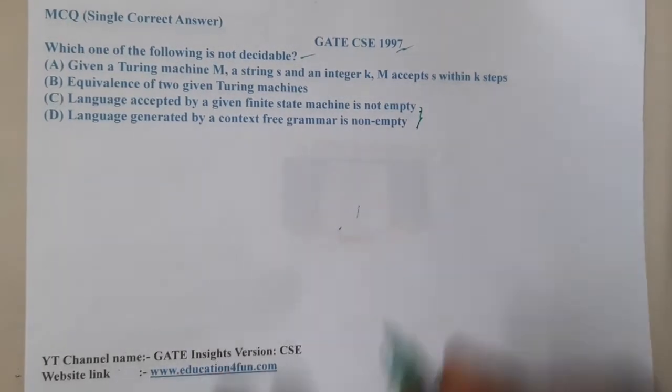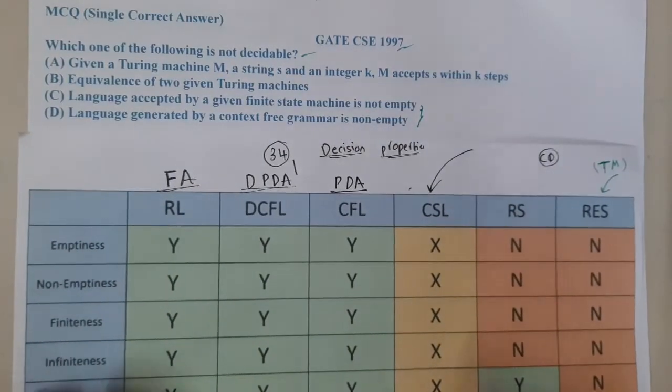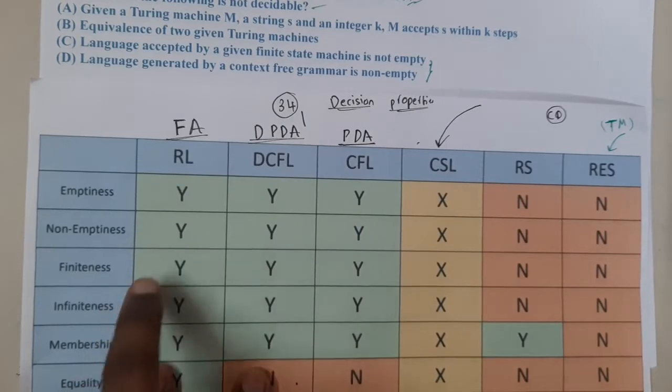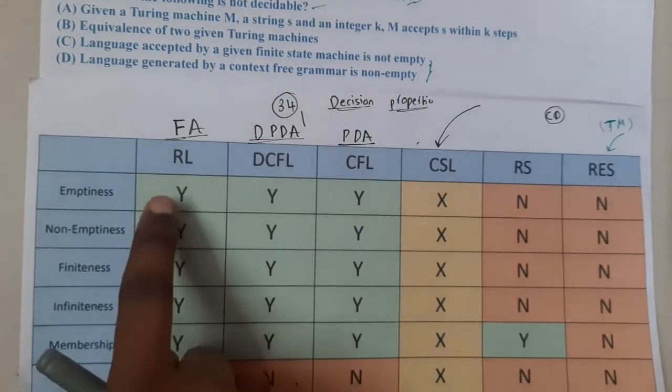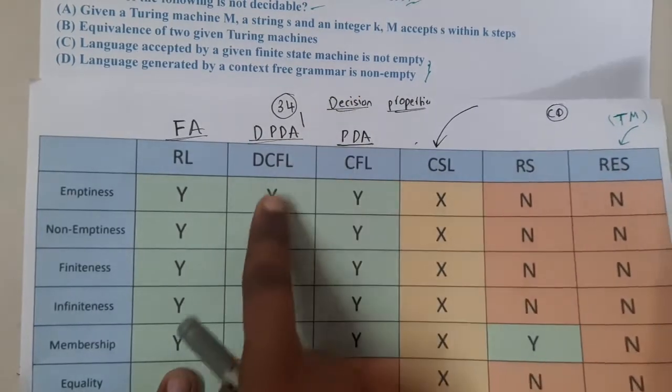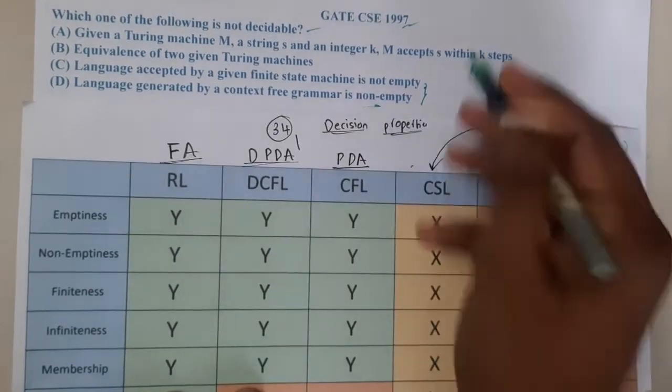Language accepted by the finite state machine - when we are talking about finite state machine acceptance like membership, emptiness, or finiteness, everything is decidable. The same condition with respect to context-free grammars - everything is decidable. Here they are talking about non-empty, so non-empty is also decidable. We can conclude that both of them are decidable.